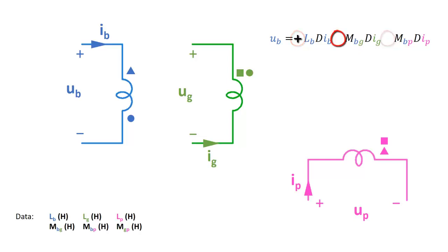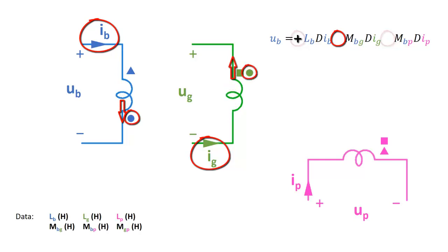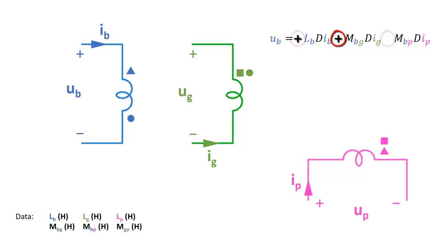For the second term we have to look at the green current and the blue current. As you can see, the blue current is leaving the coil by the circle and the green current is leaving the green coil by the circle. So both currents are entering both coils by corresponding terminals. In this case the second term will have the same sign as the first term. Otherwise, if the currents do not enter both coils by corresponding terminals, then the second term would have the opposite sign.